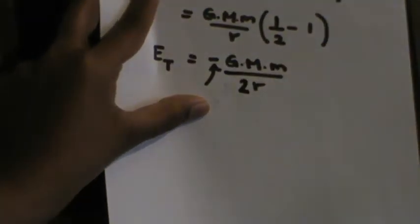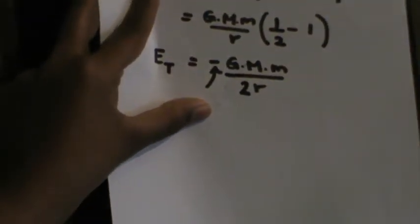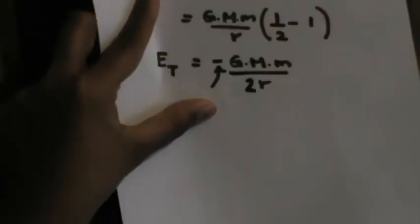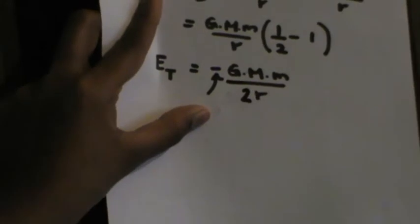So the total energy of the satellite is Et equals minus G times capital M times simple m divided by 2R. The minus value is due to the work done by the external agent. This is not due to some energy loss from a collision or chemical or physical reaction inside the object; the negative sign is due to the force of attraction, or the force of gravity.